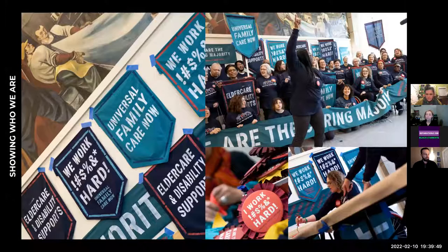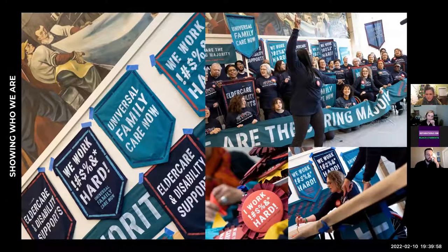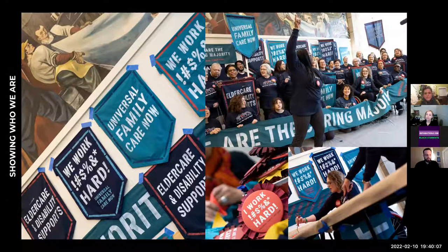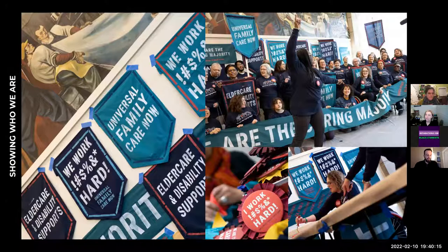This is signs, banners, and pins that we made with Caring Across Generations — a coalition of elders, people with disabilities, and care workers who provide care for each other. This is at a summit in Detroit, which is why you're seeing the labor mural in the background. Care workers are traditionally excluded not just from labor organizing, but from being thought of as workers at all — there's a lot of gender and history in that.